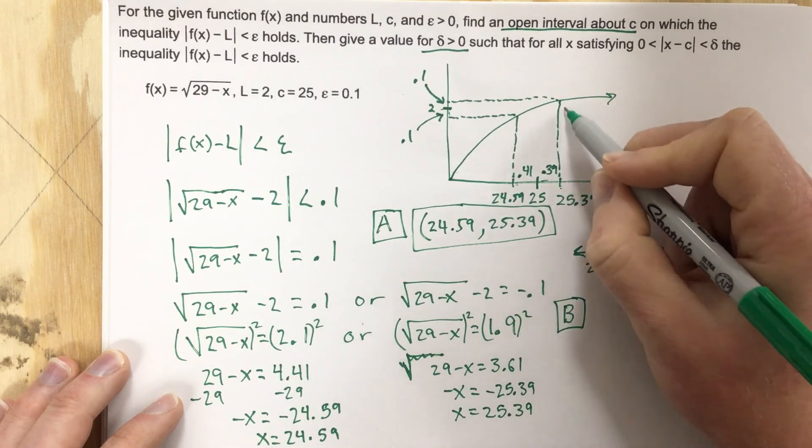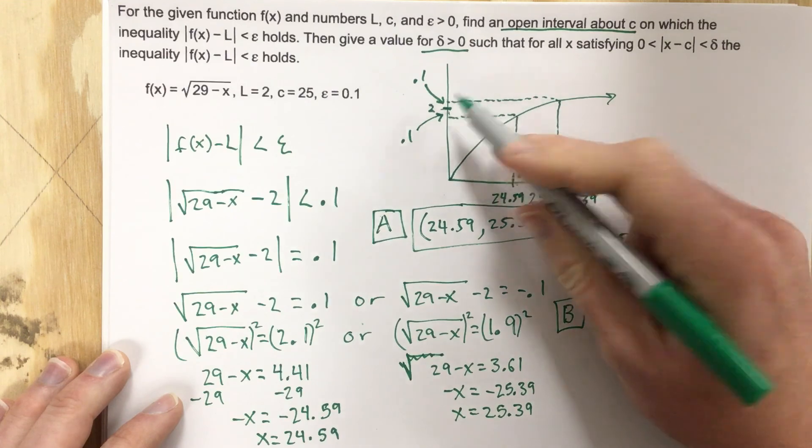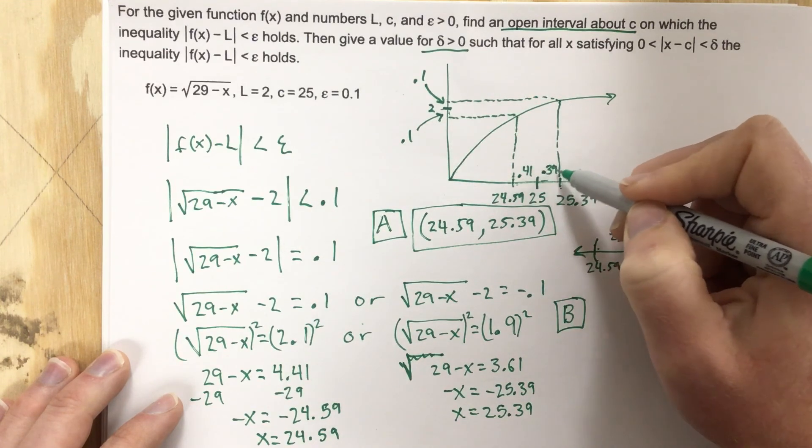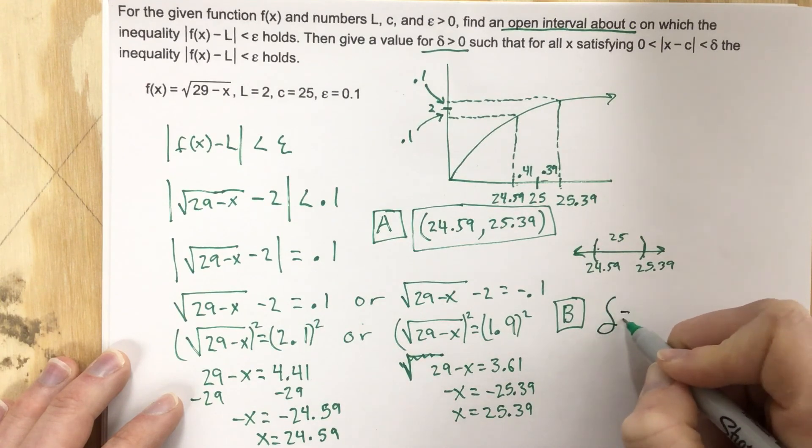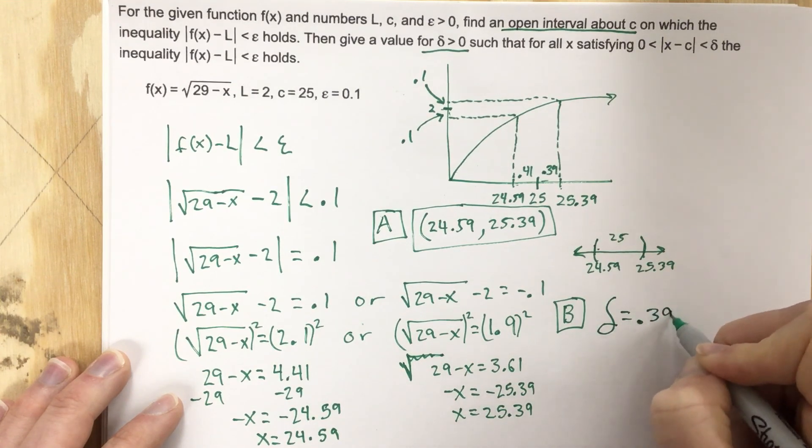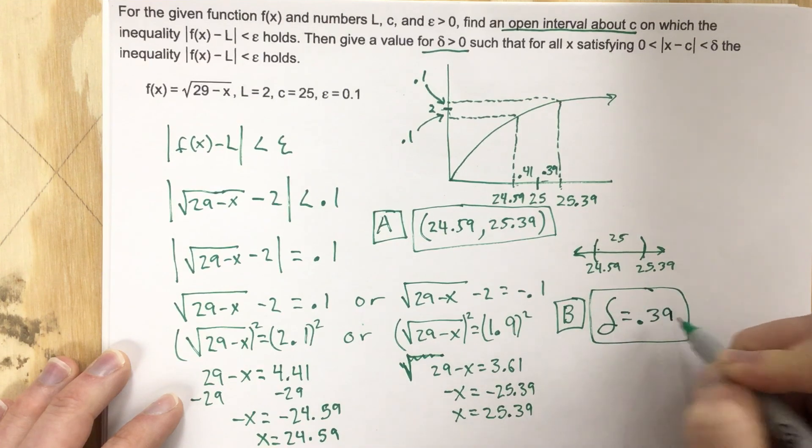we would be outside of our tolerance for the 0.1. It would be out here, would go up, and then we'd go over, and we'd be outside that tolerance. So we have to use delta being 0.39 for this problem. So we say delta = 0.39, and that's our solution for the delta value.